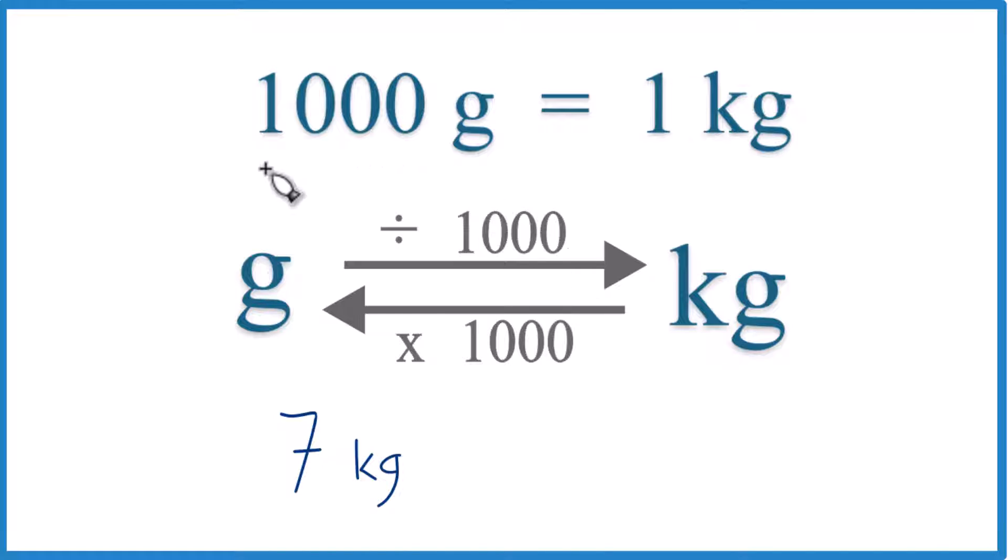What you need to know first is that there are 1,000 grams in one kilogram, something you should memorize. We call this a conversion factor, and we need it if we're going from grams to kilograms or kilograms to grams.